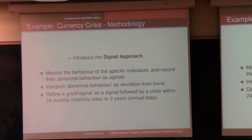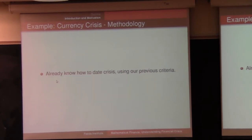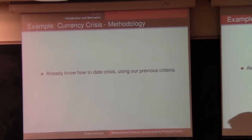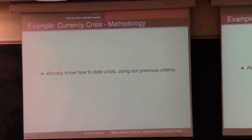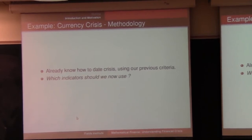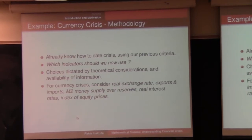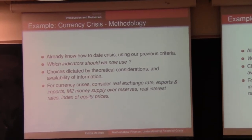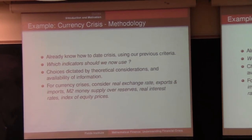This is a very elementary approach that works pretty well. The methodology applies to currency crises. We already know the crisis dates from previous criteria. Now, which indicators should we use? There are tons of economic indicators. The choices are guided by theoretical considerations and data availability. We know which indicators should have an impact on which kind of crisis.